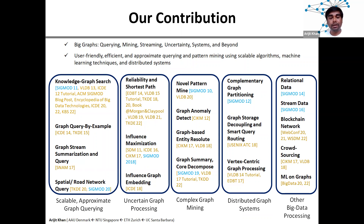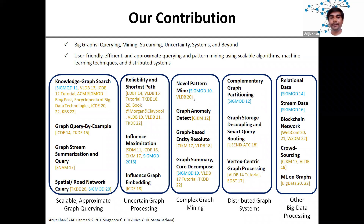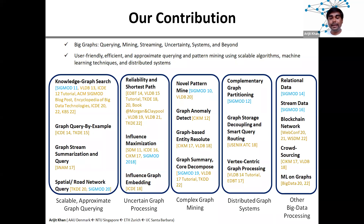On uncertain graphs we are working on reliability and shortest path queries, influence maximization, and influence graph embedding. Graph embedding or graph representation learning is a very hot topic these days, and here we work on the problem of influence graph embedding. In the area of complex graph mining, we propose novel graph patterns such as proximity patterns and correlation patterns, and we show their usefulness in the biological domain, in graph anomaly detection, and in graph-based entity resolution. We are also working on graph summarization, core decomposition, and multi-layer networks.